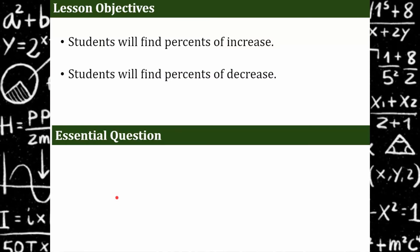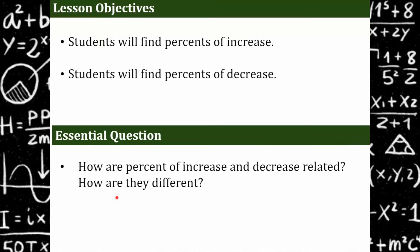Your objectives today are that you, the student, will find percents of increase and percents of decrease. As we go through the lesson, think about how percent of increase and decrease are related and how they are different. If you think about that, then you won't make a mistake identifying which is which. We want to make sure we're identifying whether or not it's an increase or decrease.